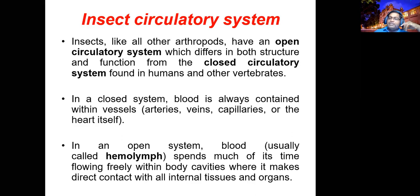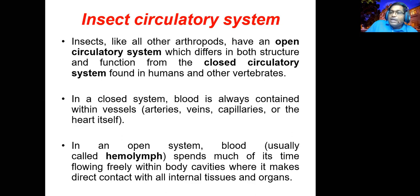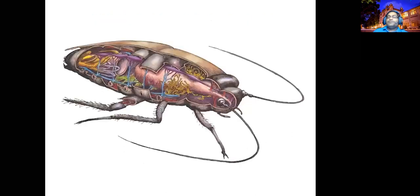In the open system, blood spends much of the time flowing freely within the body cavity — the hemocoel — making direct contact with the organs. In contrast, in the closed circulatory system, arteries and veins only communicate with the organs. That is the major difference between the insect and the mammal circulatory system.